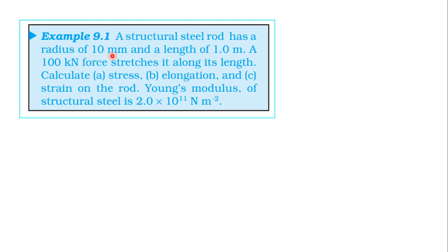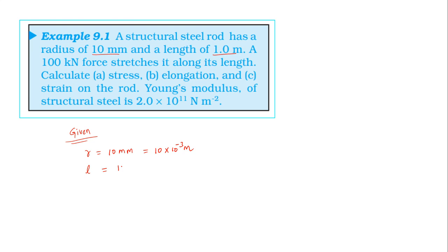The steel rod has a radius of 10 mm and length of 1 m. Force applied is 100 kN. The radius in SI units: 10 mm = 10 × 10⁻³ m. Length of rod is directly 1 meter. Force is 100 kN.